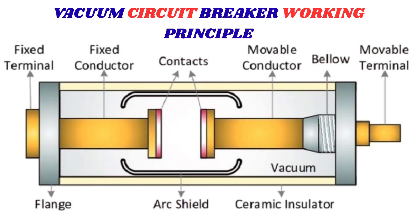Having known the properties of the vacuum environment, how do vacuum circuit breakers work? The functioning of vacuum circuit breakers is based on the principle that arcs can be rapidly extinguished when they occur in a vacuum, allowing for efficient interruption of electrical currents. When a fault occurs in any section of the power system, the vacuum circuit breaker operates and the contacts separate — an arc is established. The vacuum environment rapidly extinguishes the arc, making ionization almost impossible, thereby interrupting the circuit and eliminating the arc formed.